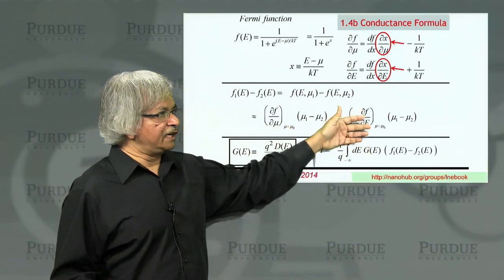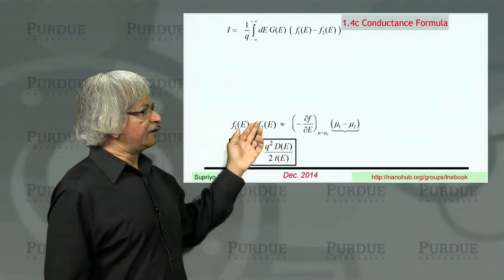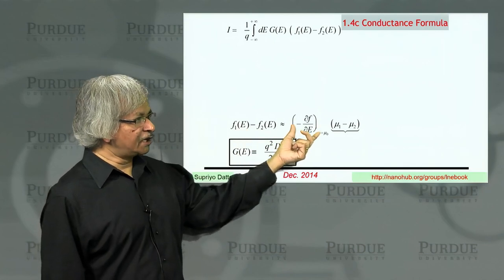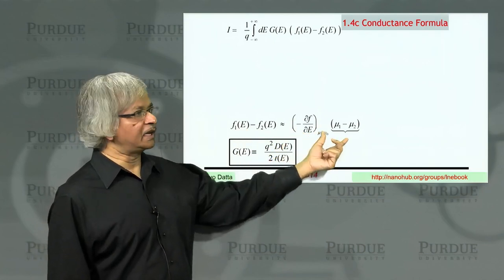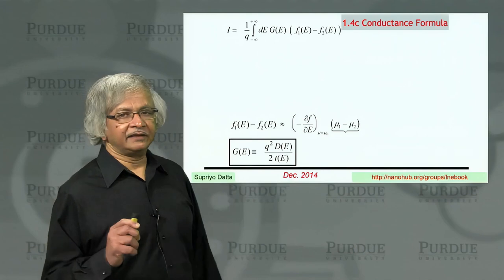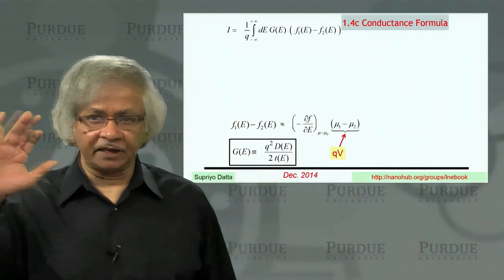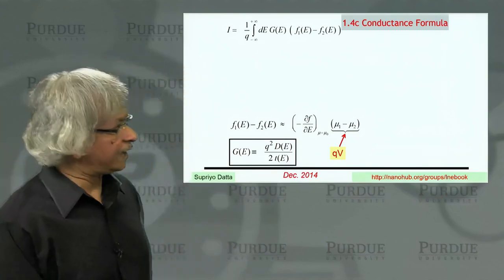So with this result, let's carry on to the next slide. We have written F1 minus F2 as the partial of F with respect to energy times mu 1 minus mu 2. And then we note that the difference between the two electrochemical potentials, that's the applied voltage, QV. So we put that in.